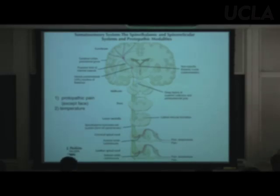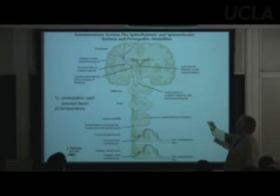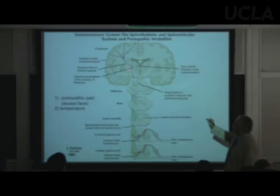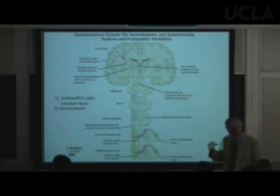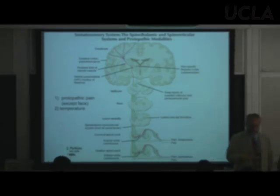The spinal reticular fibers go to the reticular formation and the periaqueductal gray; the remaining spinothalamic axons keep going all the way to the VPL — ventral posterolateral nucleus of the thalamus. Then the story is the same as the other system: from the VPL up to the postcentral gyrus.